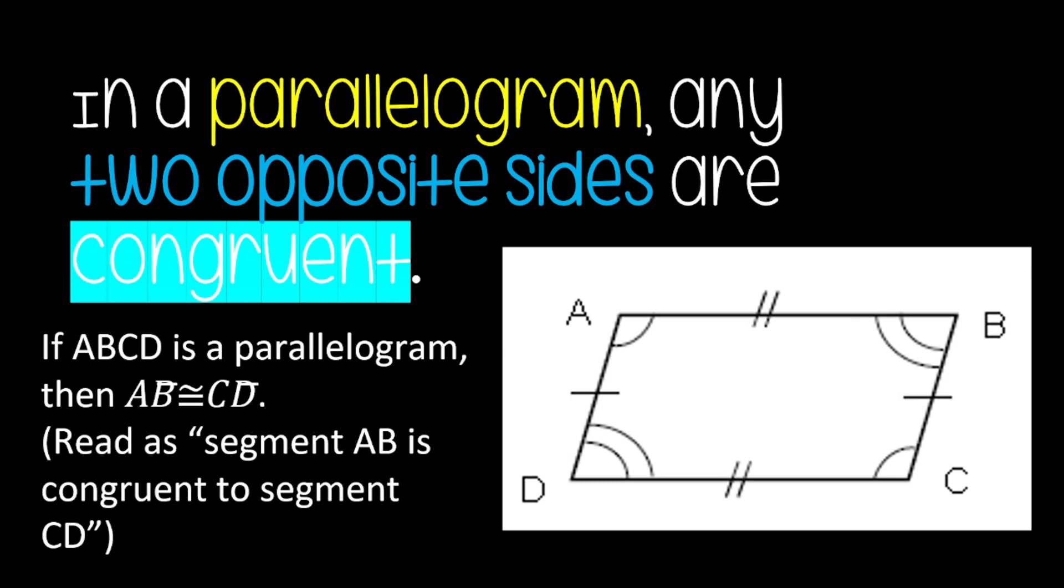And meron tayo dito mga tick mark na nagre-represent dito sa ating unang properties na kung saan ang opposite sides are congruent. And if ABCD is a Parallelogram, then AB is congruent to CD.